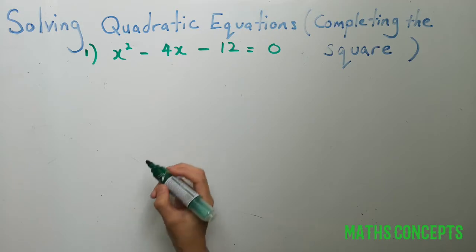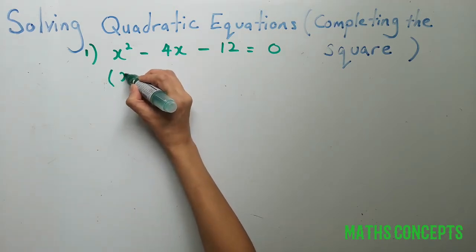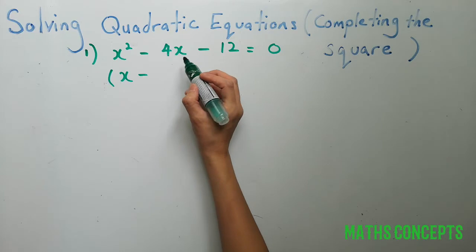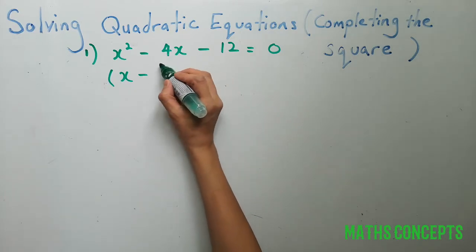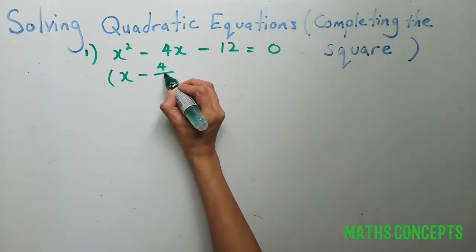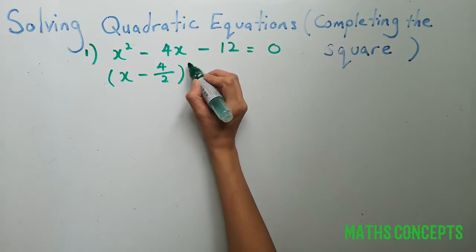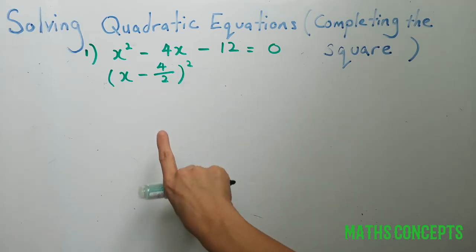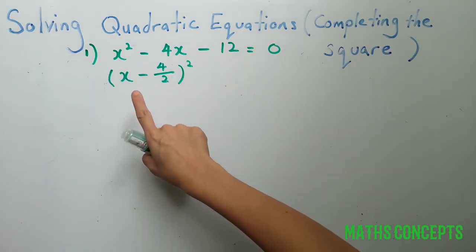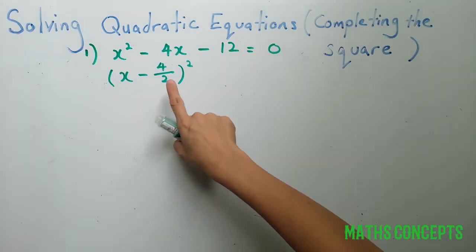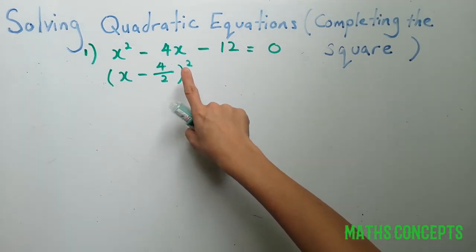So let's halve the middle term which is 4x. We halve it to get 4 over 2 squared. As you see, x squared now becomes x, and the minus 4x, right now we remove the x which becomes minus 4 over 2, the whole thing you square it.